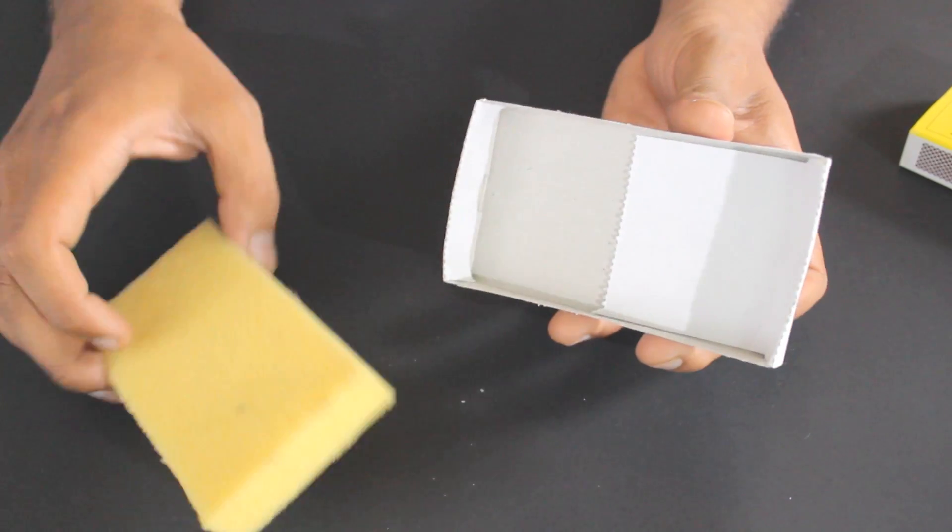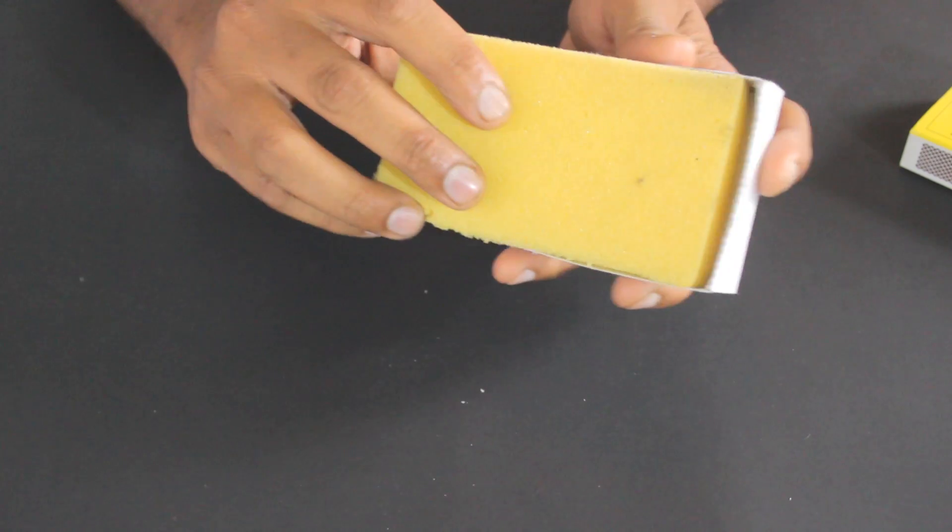Now it's time to make a launcher. For making launcher, take the empty matchbox and fill it with the cut portion of the sponge and close it with the lid.